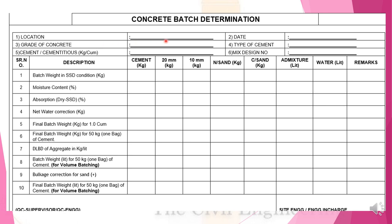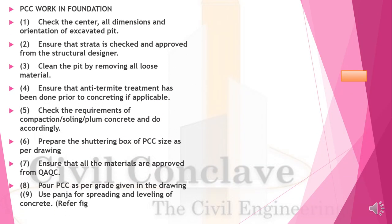The concreting batch card must mention: location of concreting, grade of concrete, type of cement, mix design batch weight, cement quantity, metal quantities, and all other related details. This has to be prepared for every batch and every day.